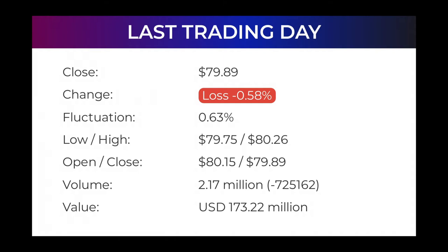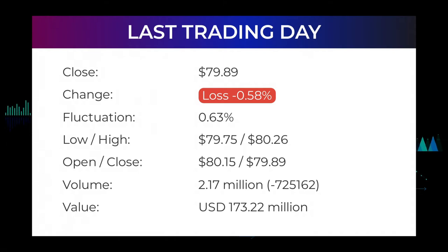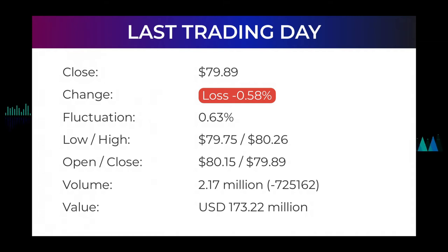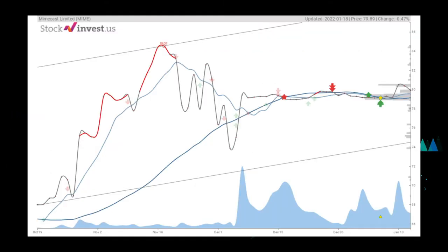Volume fell on the last day along with the stock, which is actually a good sign as volume should follow the stock. On the last day the trading volume fell by minus 725,000 shares, and in total 2 million shares were bought and sold for approximately $173.22 million. In the last 52 weeks the highest price was $85.48 and the lowest was $38.84. Right now the price is 6.54%, or $5.59, below the 52-week high of $85.48, which is also the all-time high for the stock.